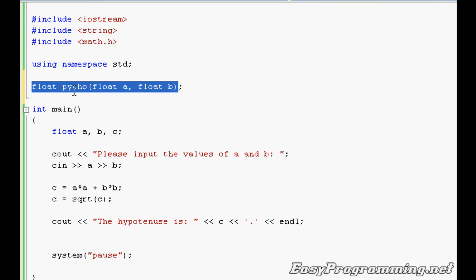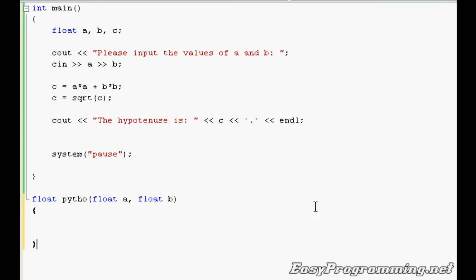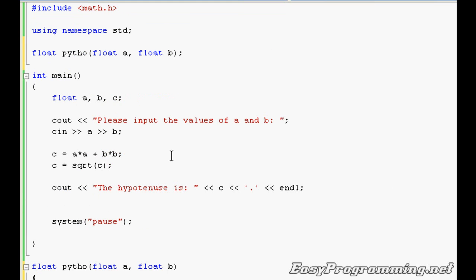So to implement the function, I'm going to copy this part up until the semicolon, but not the semicolon itself. I'm going to go down here, I'm going to paste it, open some braces, and it'll look like a main program in itself. That's what a function looks like. Once again, remember this is outside of the main program, not inside.